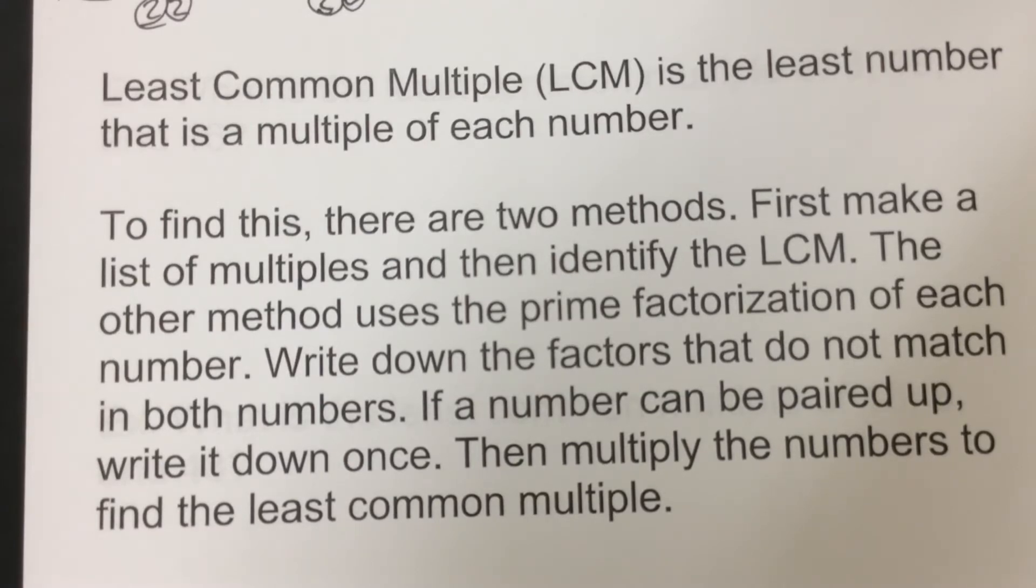So we can start with the smallest and work our way up. And then once we find one that matched, we circle it and that's the least common multiple. The other way is again to do the prime factorization, but we're going to pair up numbers. If they all have it, we'll circle it and write it down once. If only two have it, we'd circle it and write it down once. And then if none of them have it, we'll circle it and write it down once.